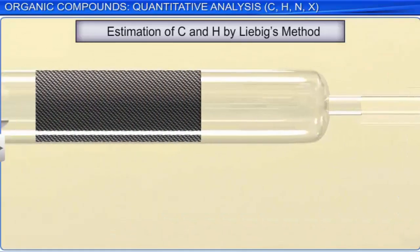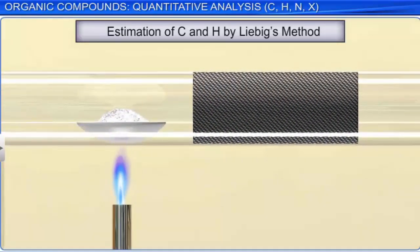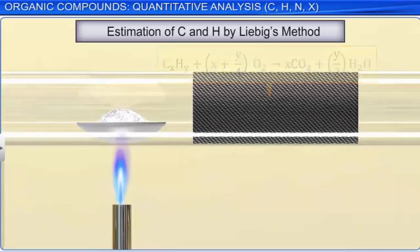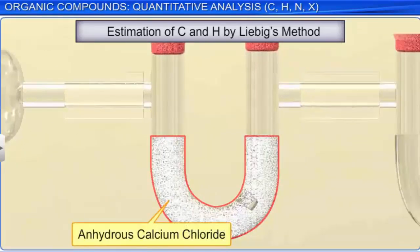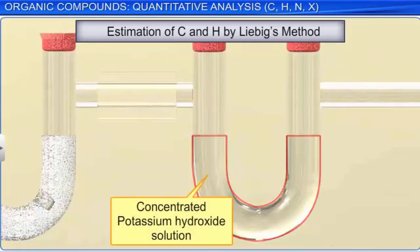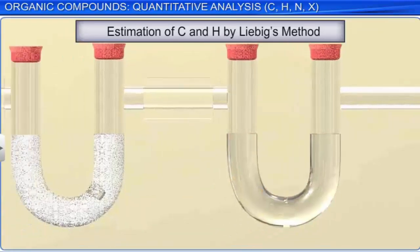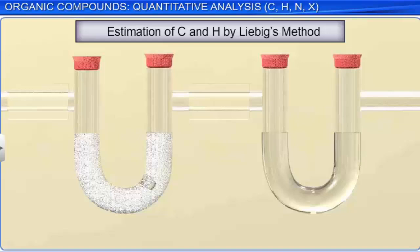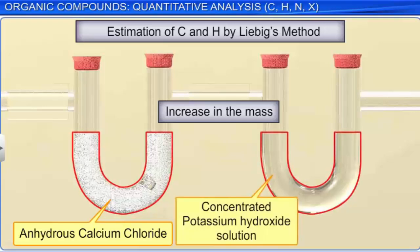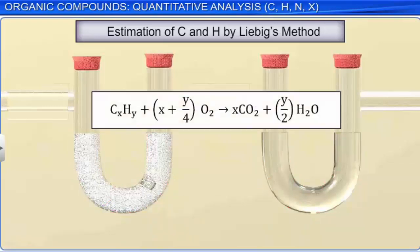One absorption tube contains anhydrous calcium chloride, while the other contains concentrated potassium hydroxide solution. The combustion tube is heated and pure oxygen is passed through it. Carbon dioxide and water are formed. Water is absorbed in the tube containing anhydrous calcium chloride, and carbon dioxide is absorbed in the tube containing concentrated potassium hydroxide. The U-tubes are weighed again after absorption. The increase in masses of calcium chloride and potassium hydroxide gives the amount of water and carbon dioxide respectively. From these amounts, the percentages of carbon and hydrogen are calculated.